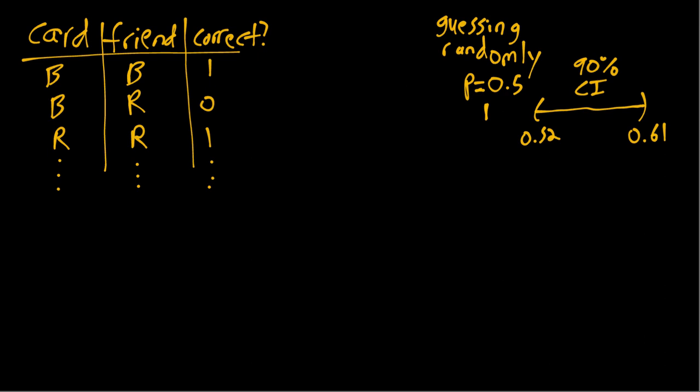So first, the first card you draw is black, and your friend guesses black, so that means the guess was correct. And then you draw a second card from the deck, it's also black, your friend guesses red, in that case it's incorrect, so we'll put a zero. And then you draw a red card, guess red, correct, we'll put a one, and so on.